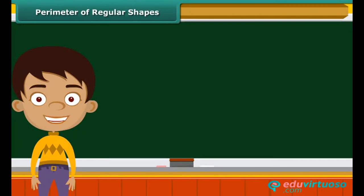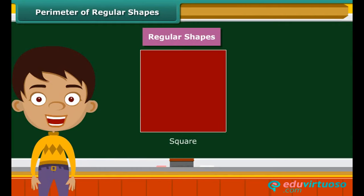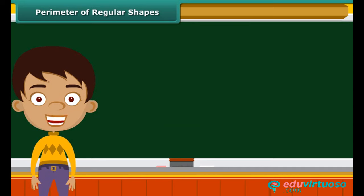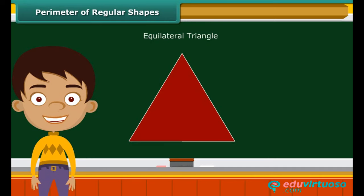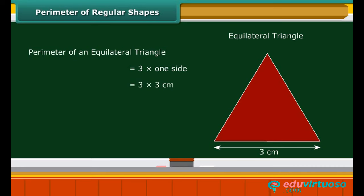Shapes that have all sides of equal length and all angles of equal measure are known as regular shapes. A square is a perfect example of a regular shape. Another regular shape is the equilateral triangle, whose three sides are equal. The perimeter of an equilateral triangle is 3 multiplied by its side. For example, an equilateral triangle of side 3 centimeters has a perimeter of 3 × 3 = 9 centimeters.